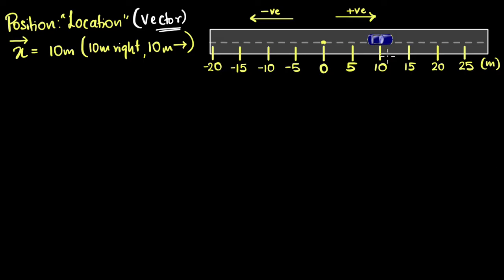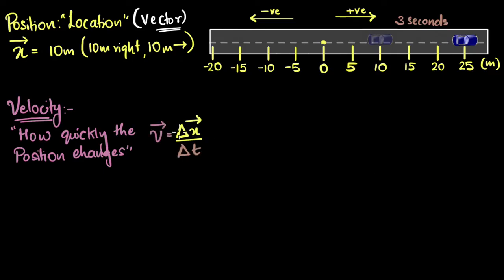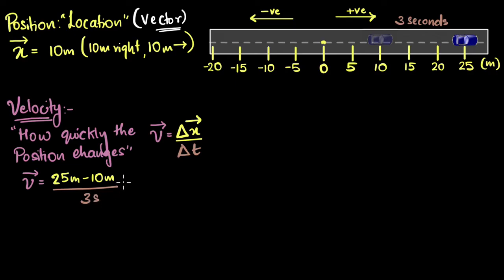Now let's make the car actually move. Let's say the car moves from here to here in three seconds. We can define a new quantity called velocity. Velocity is a measure of how quickly the position of the car has changed, and we calculate it as change in position (delta x) divided by the time taken for that change. So in our example, what is the change in position? It went from 10 to 25, so the position changed by 15 meters — that's 25 minus 10. Divide by the time taken, which is three seconds: 15 divided by 3 is 5 meters per second.